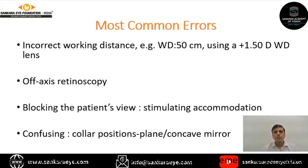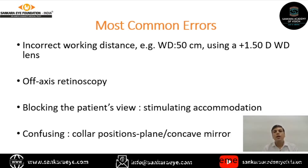The most common errors in retinoscopy are: incorrect working distance — for example, working at 50 cm requires a 2-diopter working distance allowance, not 1.5 diopters. Performing retinoscopy off-axis instead of straight ahead introduces errors. Blocking the patient's view — always ensure the non-examined eye is looking at the target. Incorrect use of the mirror sleeve — moving it incorrectly can cause confusion between plain mirror and concave mirror modes.